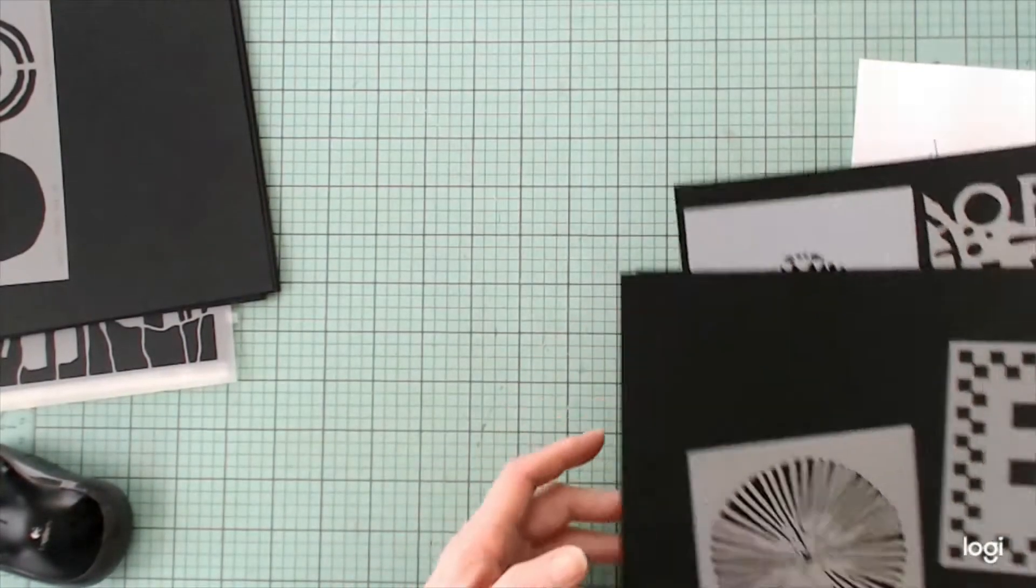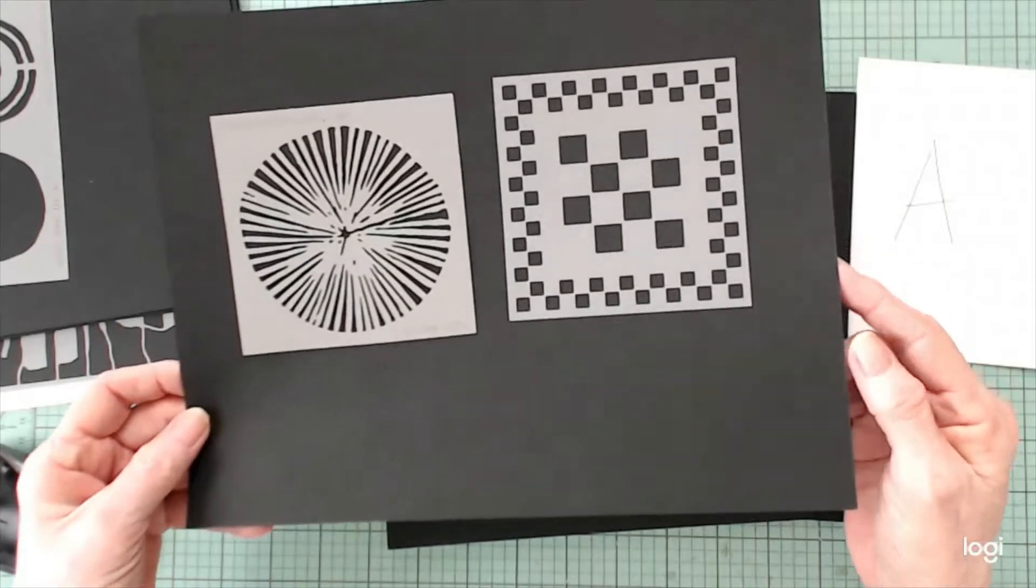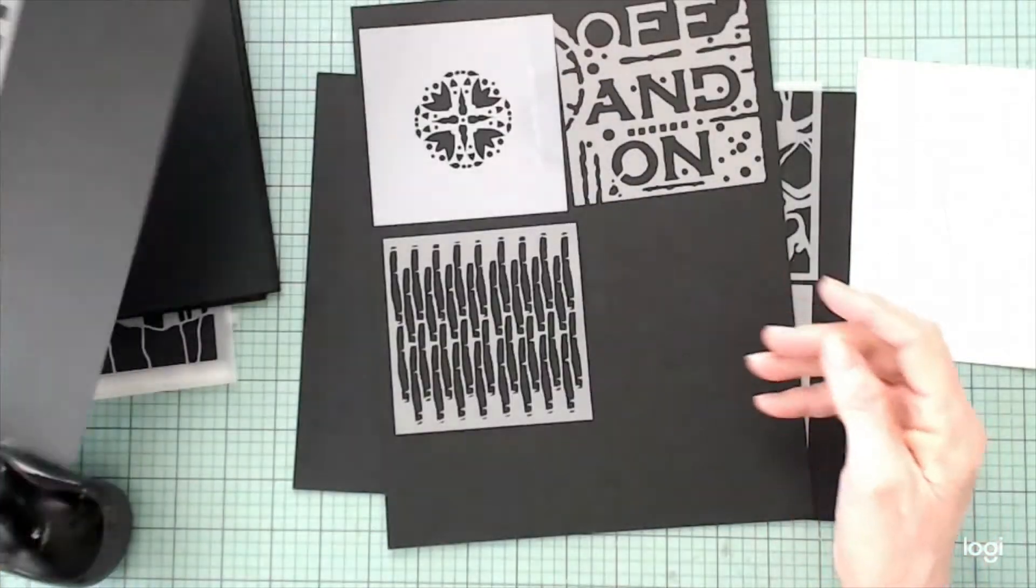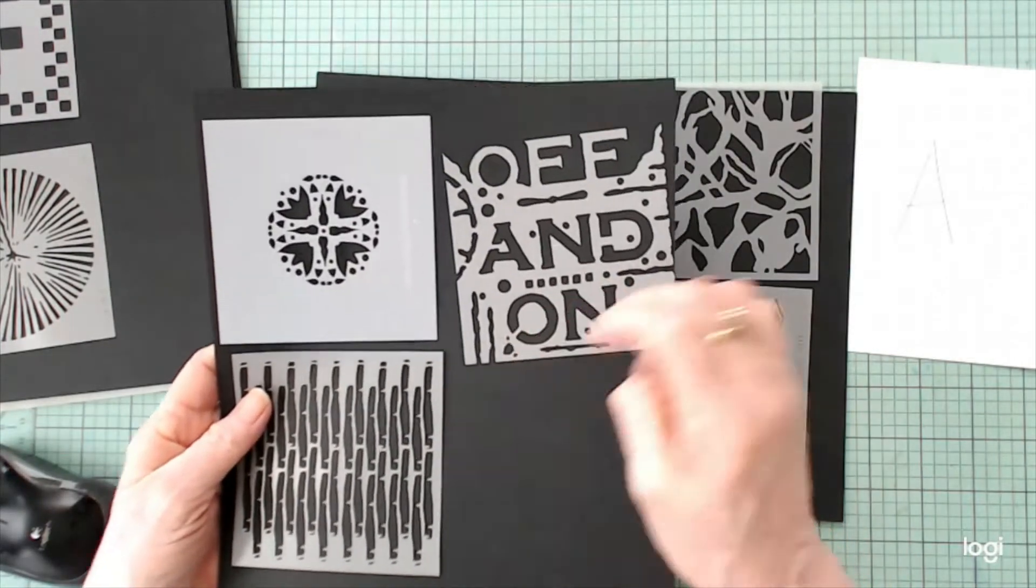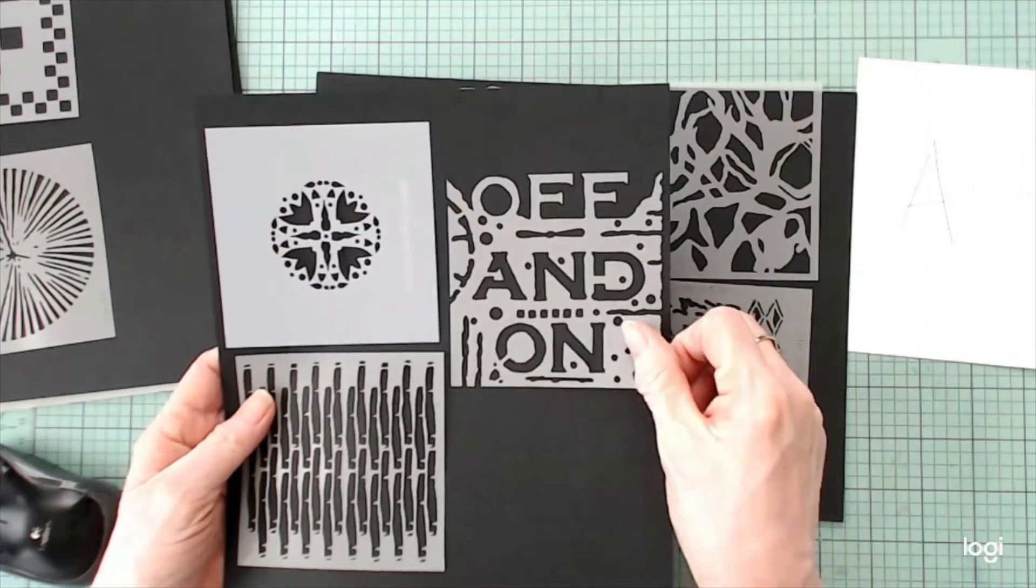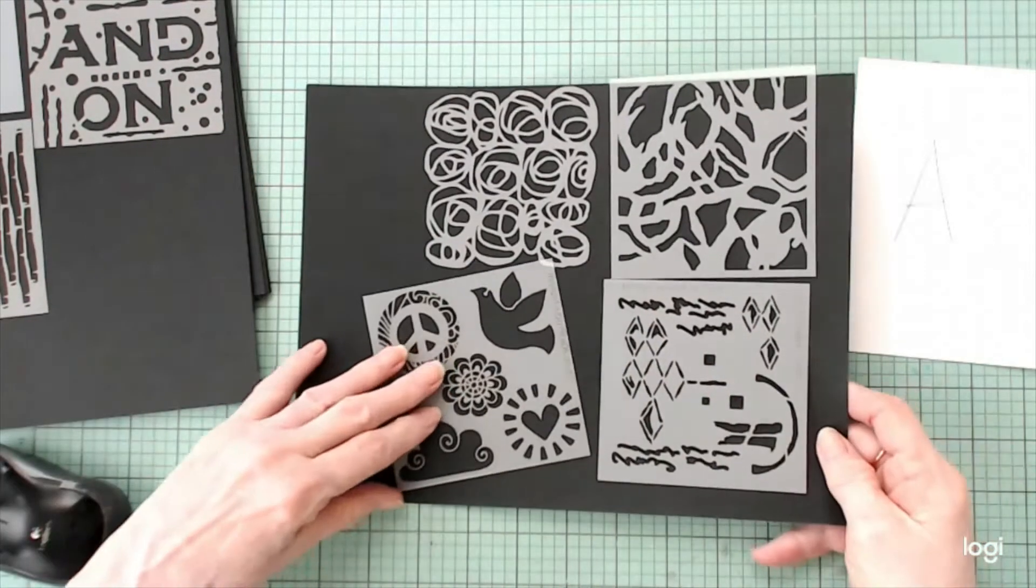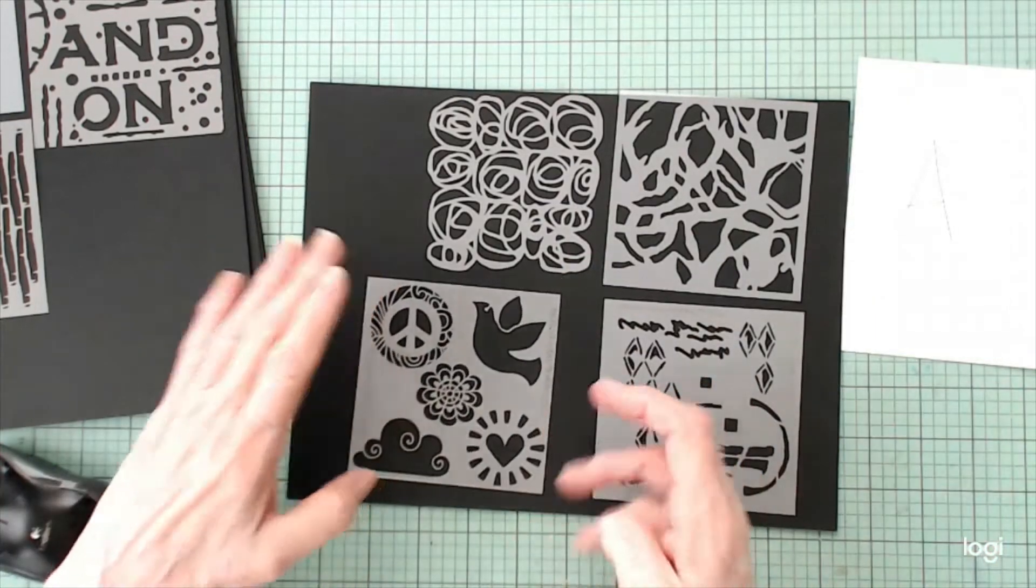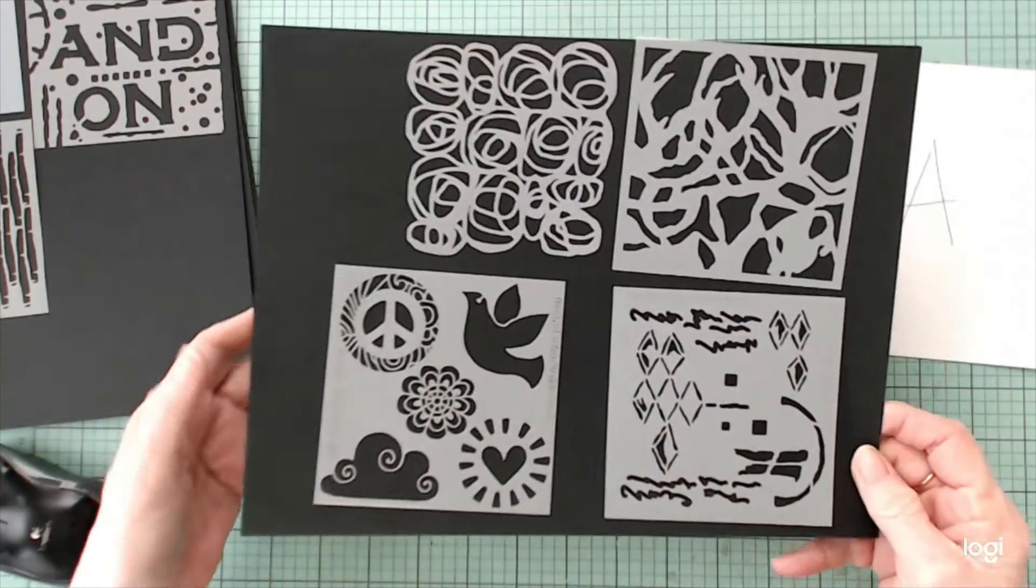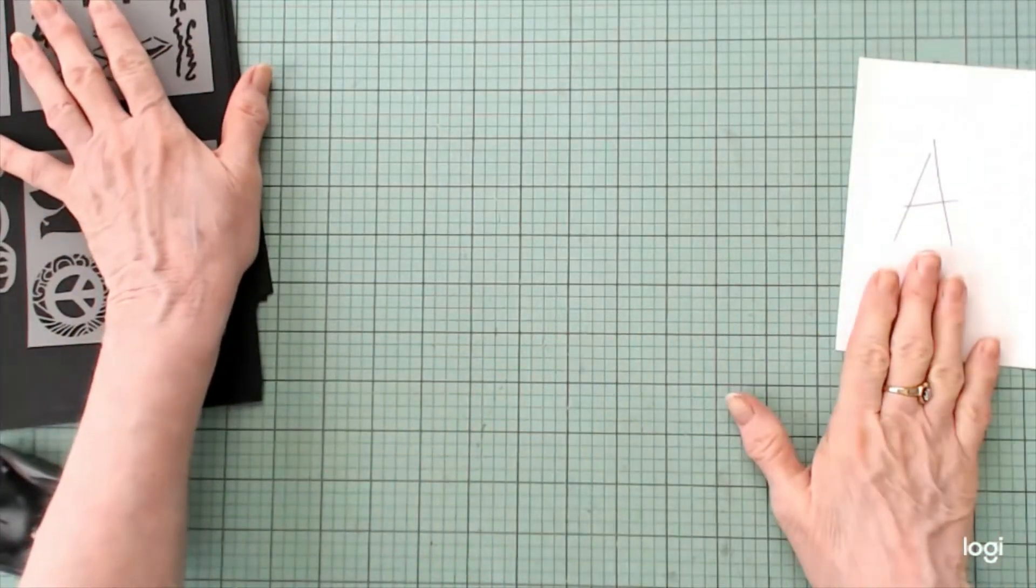So these are the smaller ones. And I said they were four by four, but let's check. Yeah, four by four. And again, like this one here is more like a mask. So I tried to spread them through the four different sets. Okay, so that's set A.